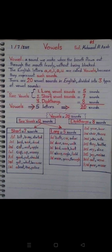Pure vowels are divided into 2 types: short vowels (7) and long vowels (5). We shall now move towards short vowels.